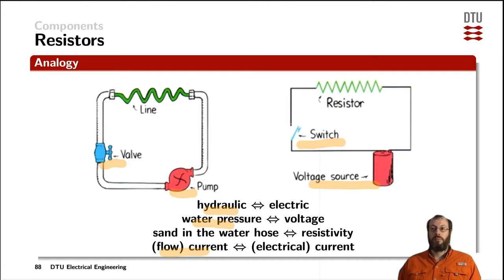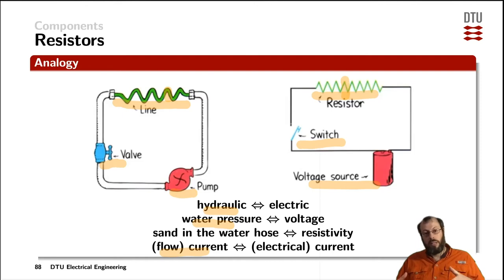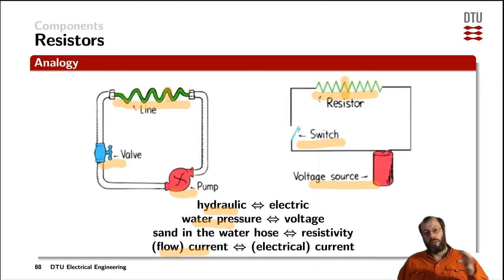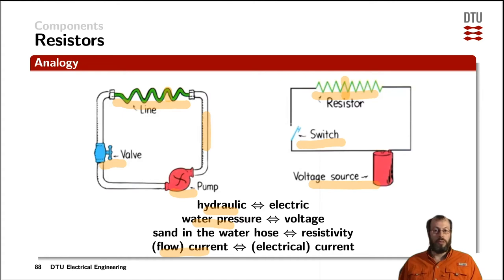For resistors, the length of a water hose is equivalent to the length of a resistor, and the diameter of the water hose is a physical representation of the diameter of the conducting resistive material. The bigger the diameter of the water hose, the more water molecules you can pass through at a given water pressure. And the longer the water hose, the more water pressure you need to circulate the current in your closed water system, which is equivalent to the voltages and resistors. The longer your resistor is, the more voltage you need to push the same amount of current through it. This explains the geometry — the length and diameter — of the resistor.